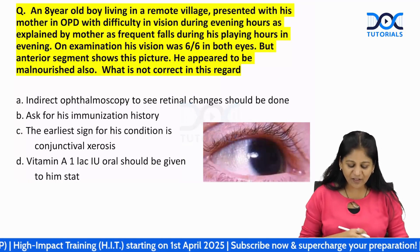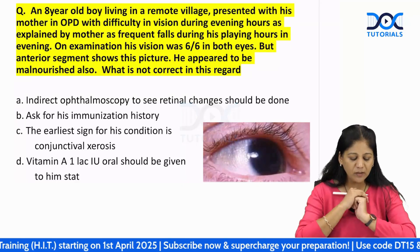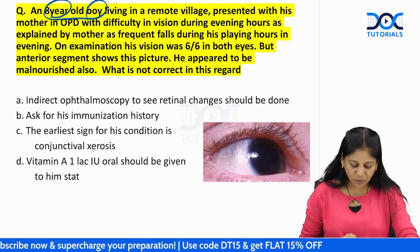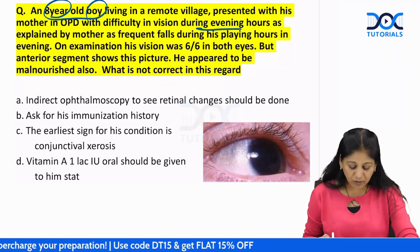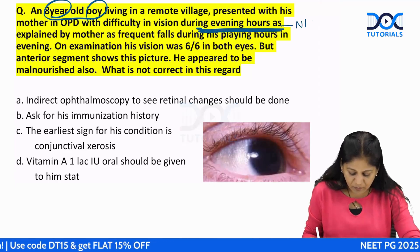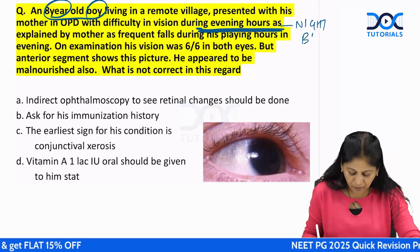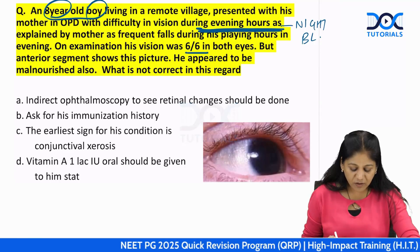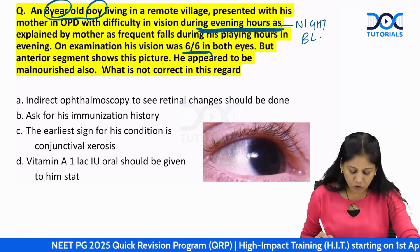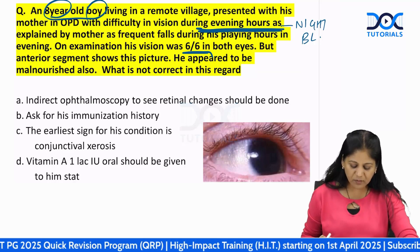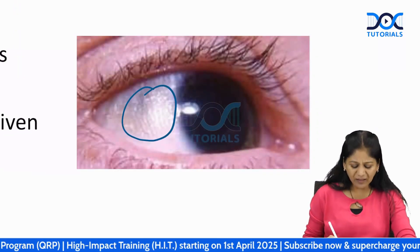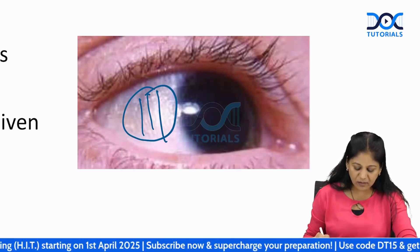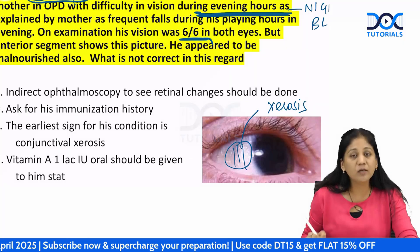Next, consider an eight-year-old boy from a remote village presenting with difficulty in vision during evening hours — night blindness. Vision is normal but the anterior segment shows dryness in the conjunctiva. We call this the stage of conjunctival xerosis.